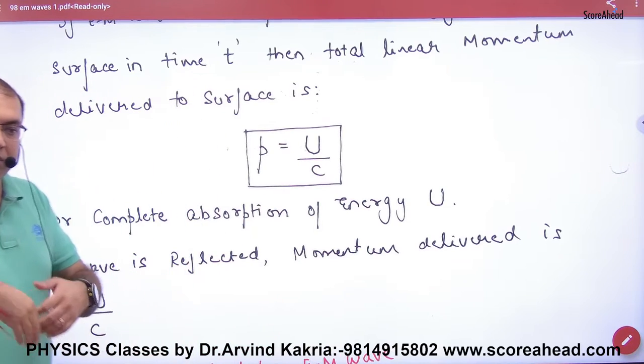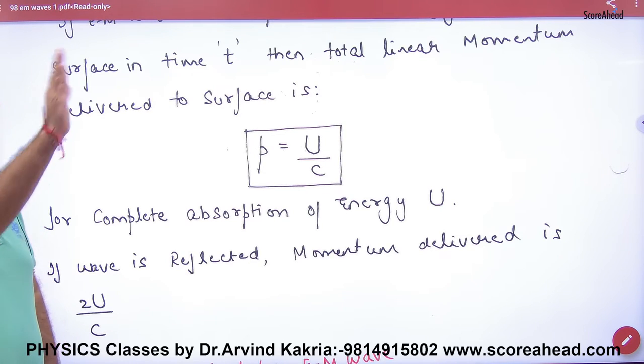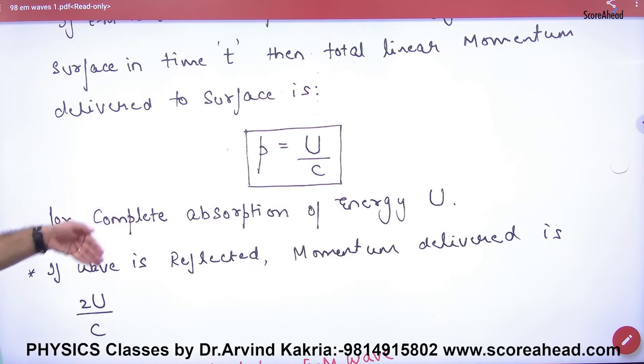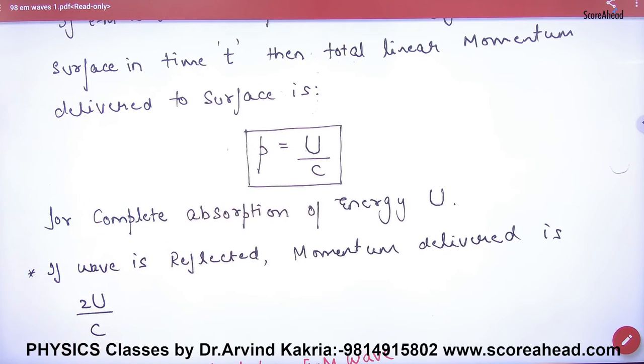If it is a pure reflector, then the momentum transferred is double—two times. So the formula for momentum will be P = 2U/C.